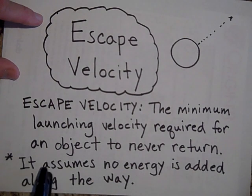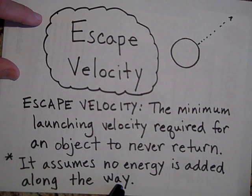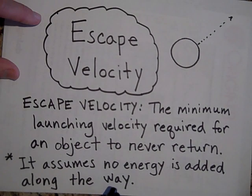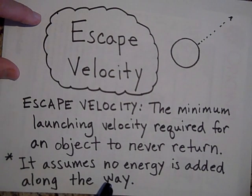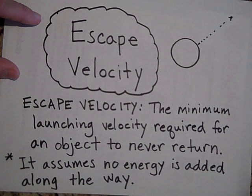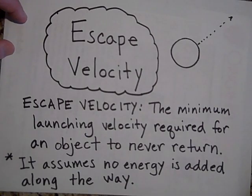Another key thing: this assumes no energy is added along the way. In a rocket that NASA would send up, they put energy into the rocket in the form of fuel, so they don't have to achieve escape velocity at launch because they're continually adding speed. That's how they can escape from the Earth without going so fast at the beginning.